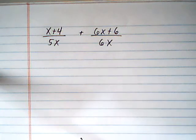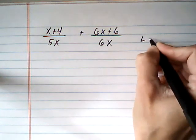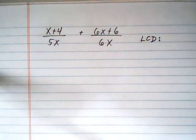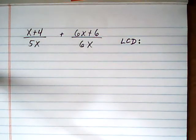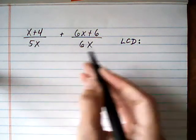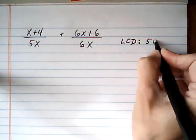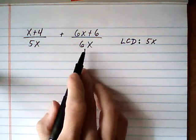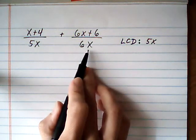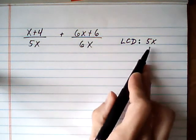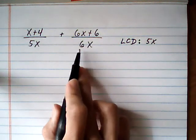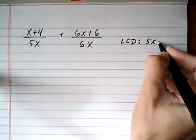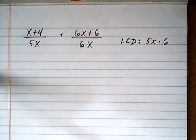So first step here is find what the LCD is. And to make the LCD, what I usually do is take the entire first denominator, 5x, and then look at the second denominator. If there's a piece that we don't have yet—for example, we've already got the x factor here but we don't have the 6—so if there's a factor that you don't have yet, multiply it in to build your LCD.